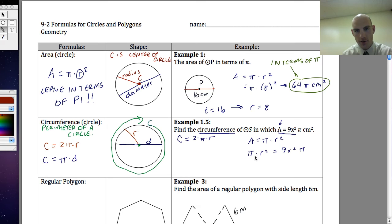I'll divide by pi on both sides, because that will get rid of pi. So I've got radius squared equals 9x squared. And so if I square root both sides, I end up with r equals 3x, because the square root of 9x squared is going to be 3x. So my radius is 3x.